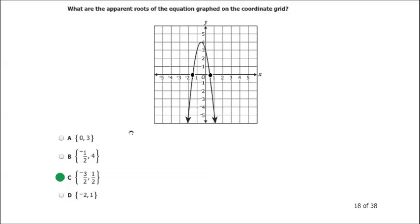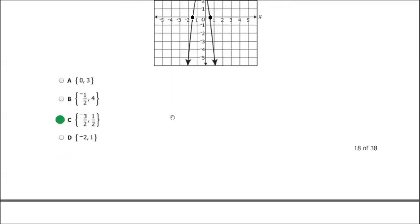And here that looks like approximately negative 1 and a half. Looking at the answer choices, negative 1 and a half — which is basically negative 3 halves — and positive 1 half fit what we have here. So choice C is the appropriate answer.